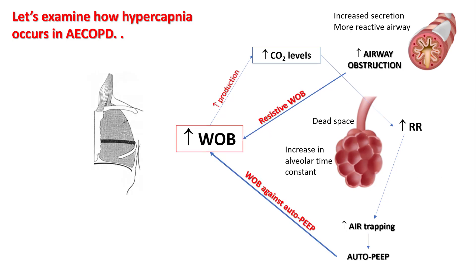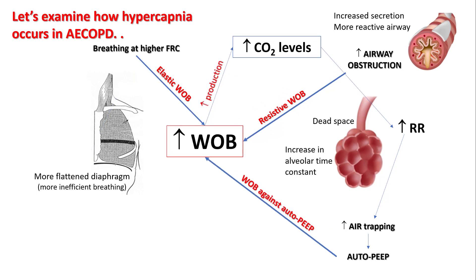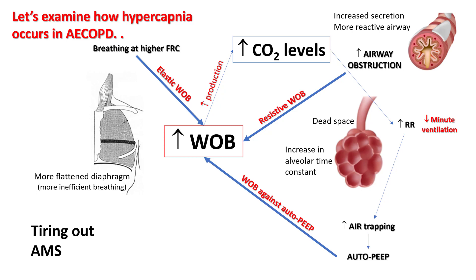Now they are breathing harder, making more CO2, and increasing their respiratory rate — and they are possibly more anxious. Air trapping causes the diaphragm to flatten further, making breathing even more inefficient. FRC is much higher, so elastic work of breathing also increases. They are now working against both auto-PEEP and elastic work of breathing, and slowly they are going to tire out — their respiratory rate will drop.